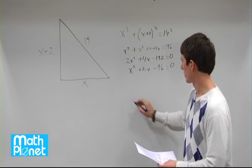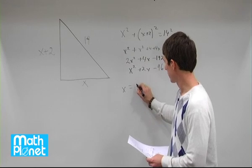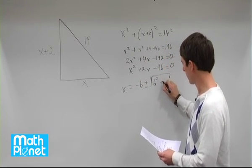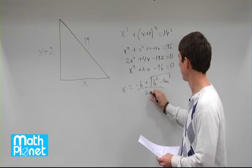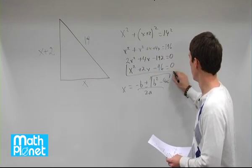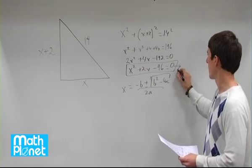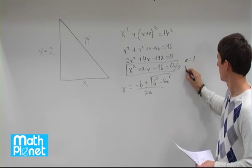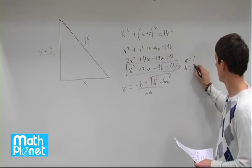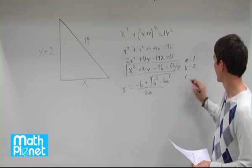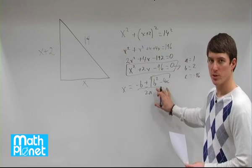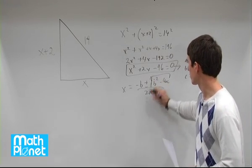So the quadratic formula reads x equals minus b plus or minus the square root of b squared minus 4ac all over 2a. So from this step, we need to find what a, b, and c are. So a is just this first term, 1, b is the second term, 2, and c is the third term, negative 96. Now we need to plug all three of these terms in here, and then we can solve for x directly.